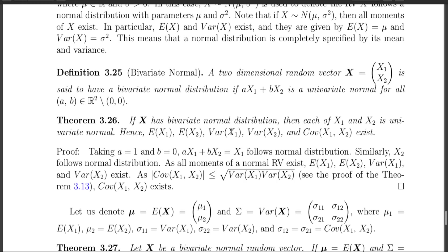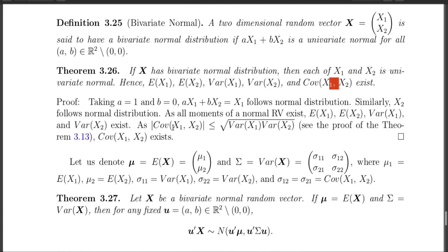Since X1 is normal, the expectation and variance of X1 exist. Similarly, X2 is univariate normal, so expectation and variance of X2 also exist. What about covariance? The covariance also exists, because by theorem 3.13 the modulus of covariance is less than or equal to the square root of variance of X1 times the square root of variance of X2. Since both variances are finite, the covariance must be finite. So for a bivariate normal random variable X, each component is univariate normal and the mean, variance, and covariance all exist.